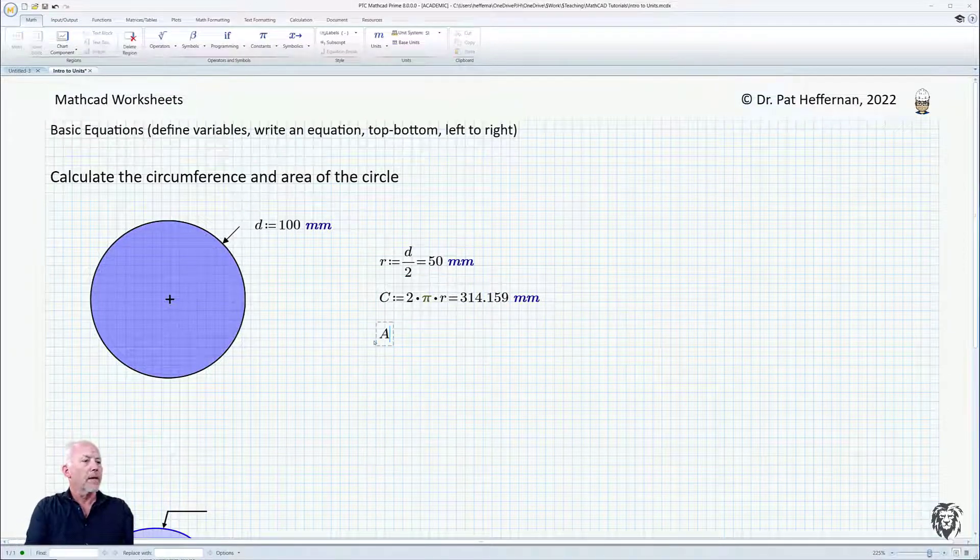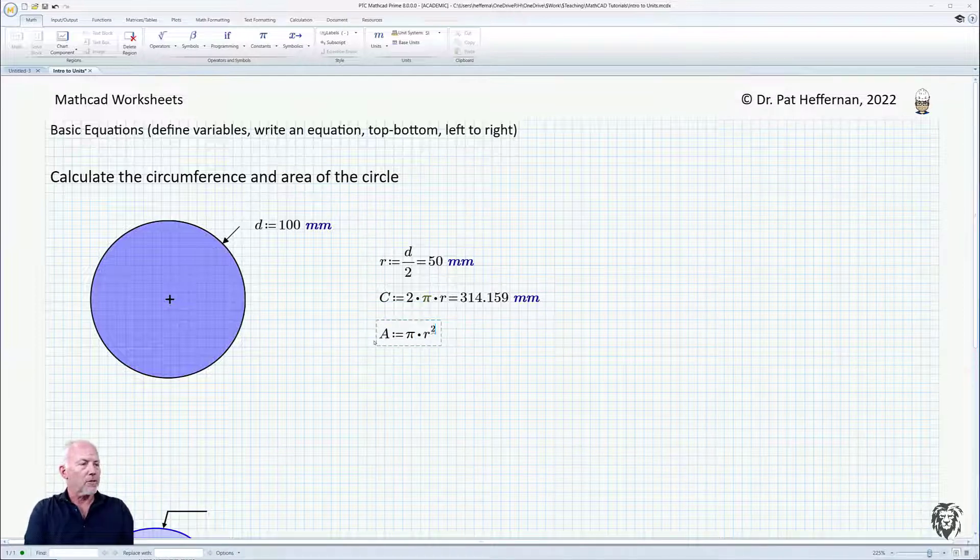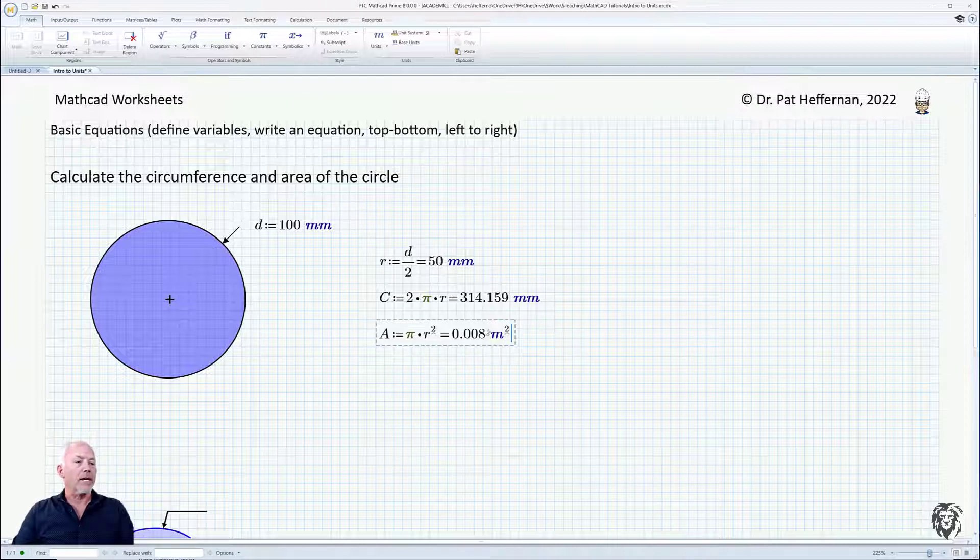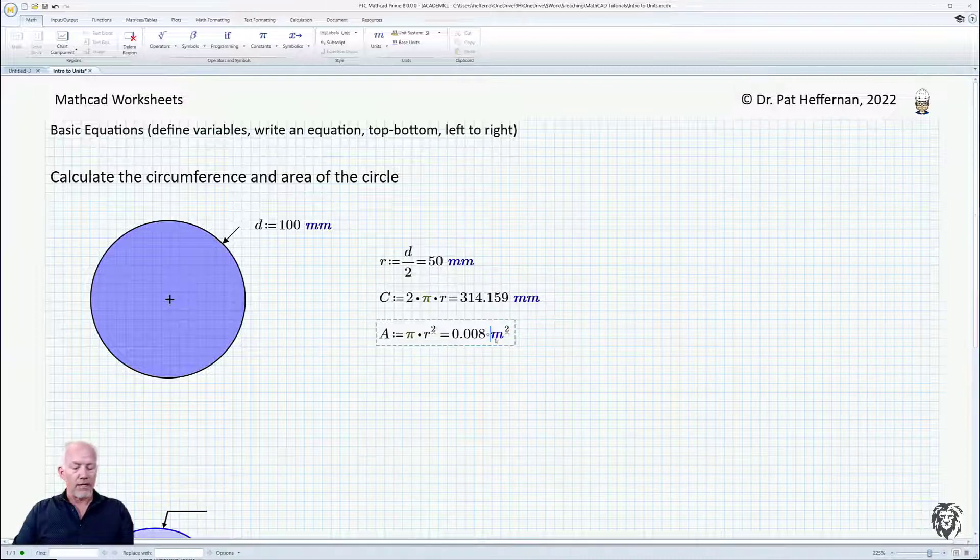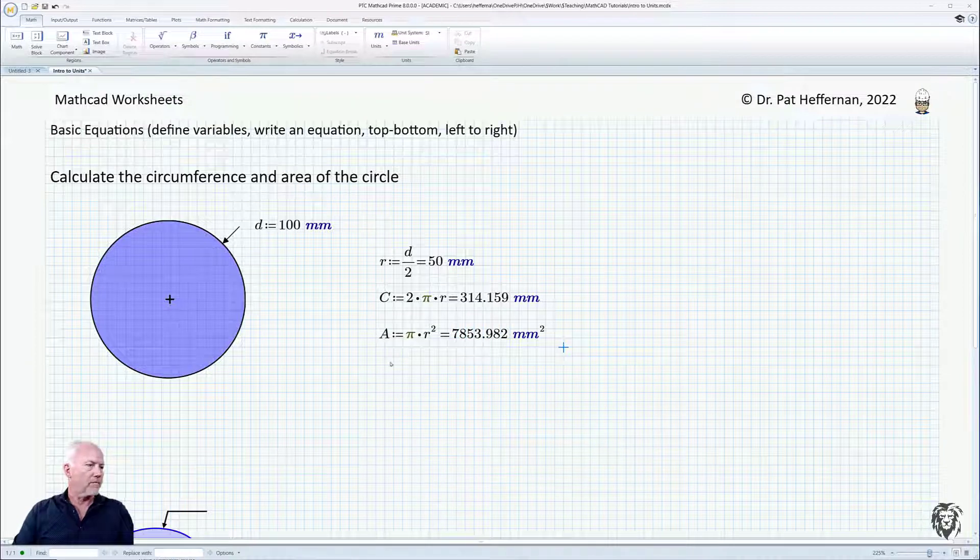Now when we go to area, area is equal to pi r squared, so the caret squared, and set that to equal to. And so it recognizes now, because of the r being raised to the power of 2, that our units are also squared. So it offers it up in meters squared, and we'll change that to millimeters squared so that we're staying consistent.